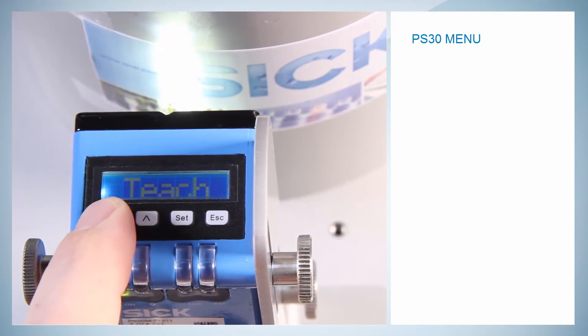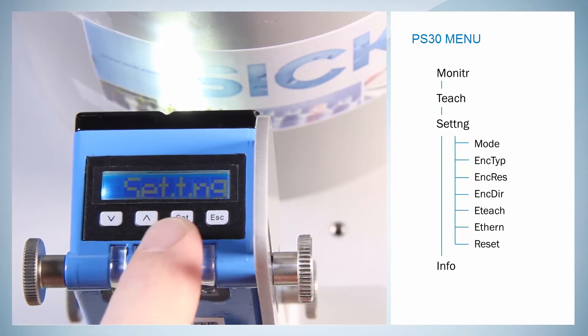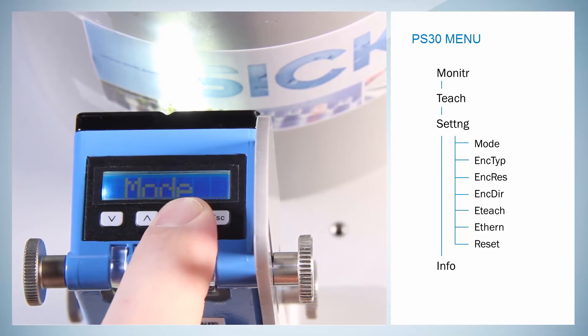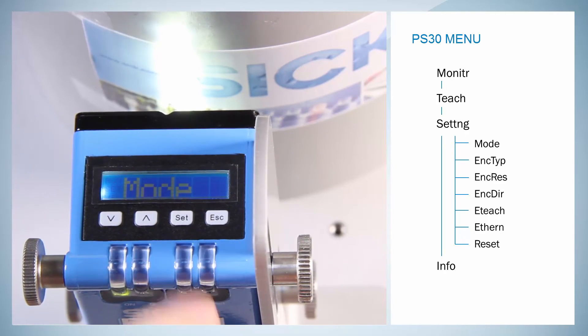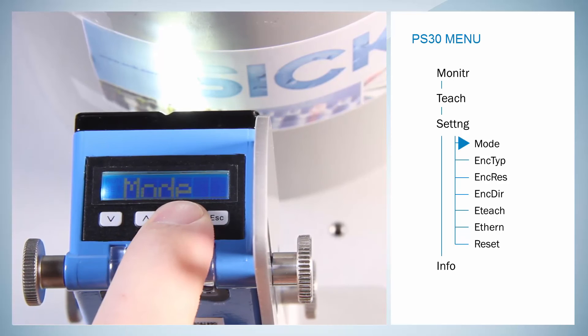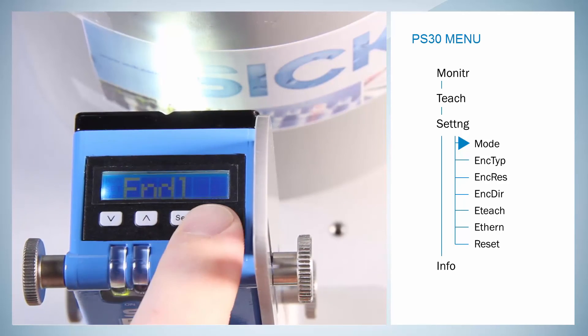The next item which is presented is the Setting menu. In this menu, the different parameters of the sensor can be modified, such as Mode, which allows a switch between single object and Endless mode.